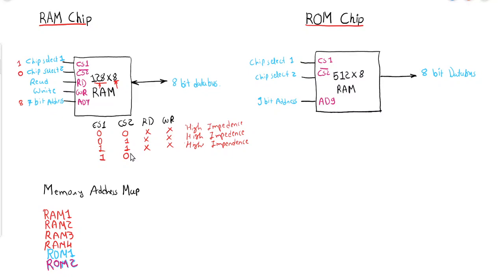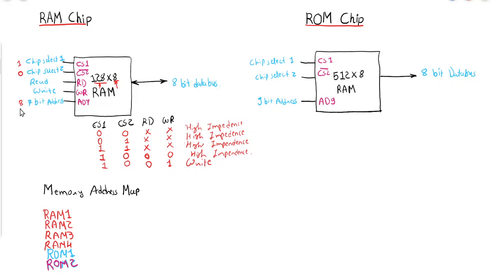Now let us discuss CS1=1 and CS2=0. If read/write is 0,0 — meaning no operation is specified — the RAM chip will again be in high impedance state, disconnected from the bus. If read/write is 0,1, that means write: whatever 8-bit data is placed on the data bus will be stored at the address specified by the 7-bit address.